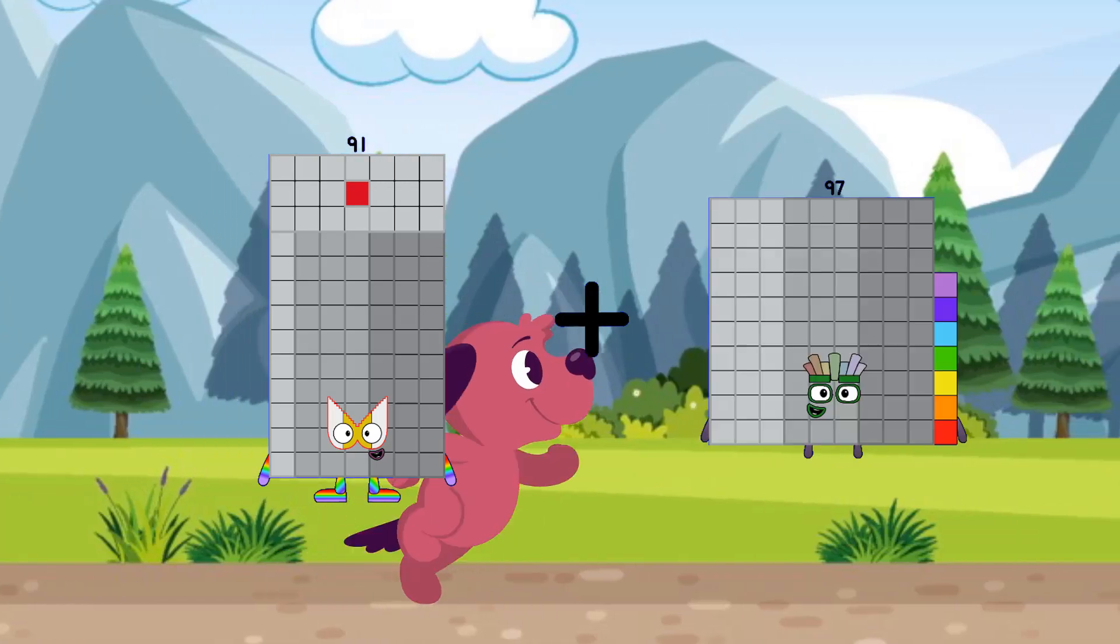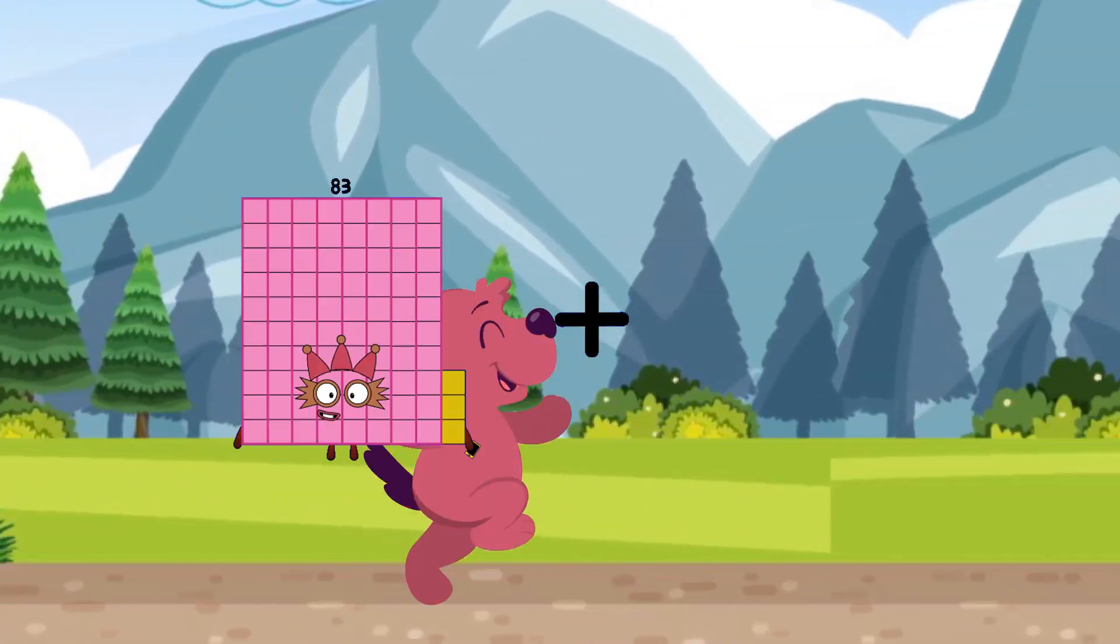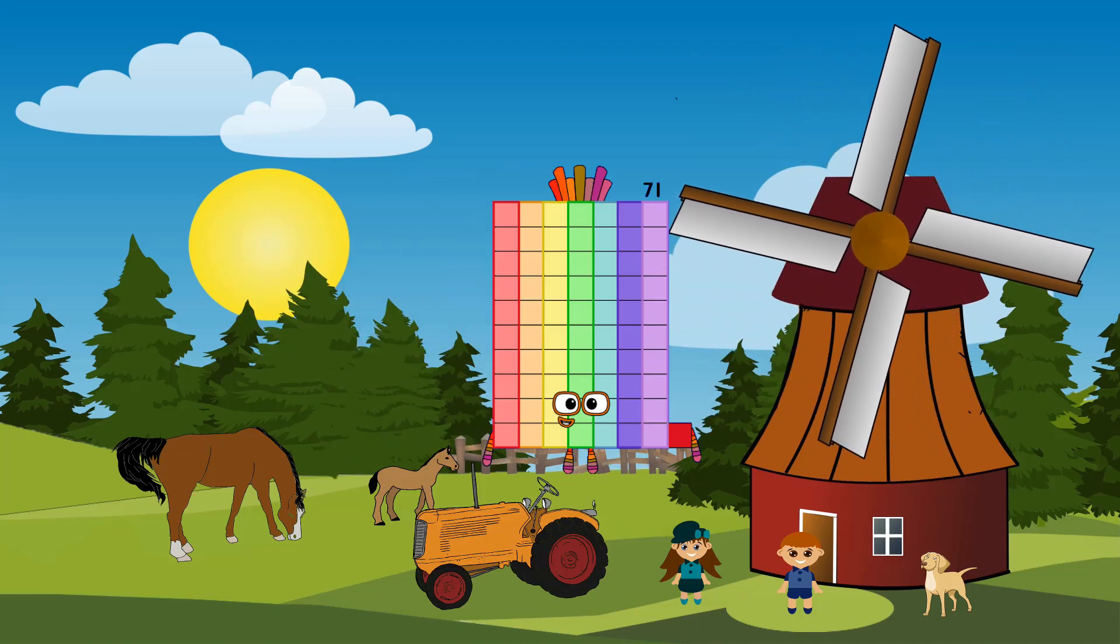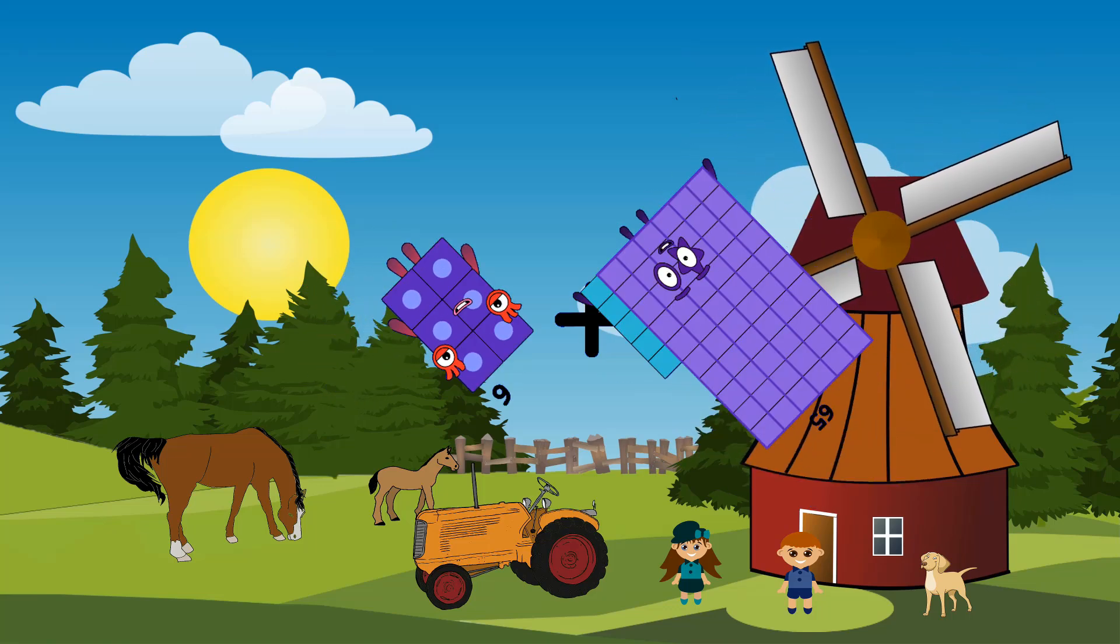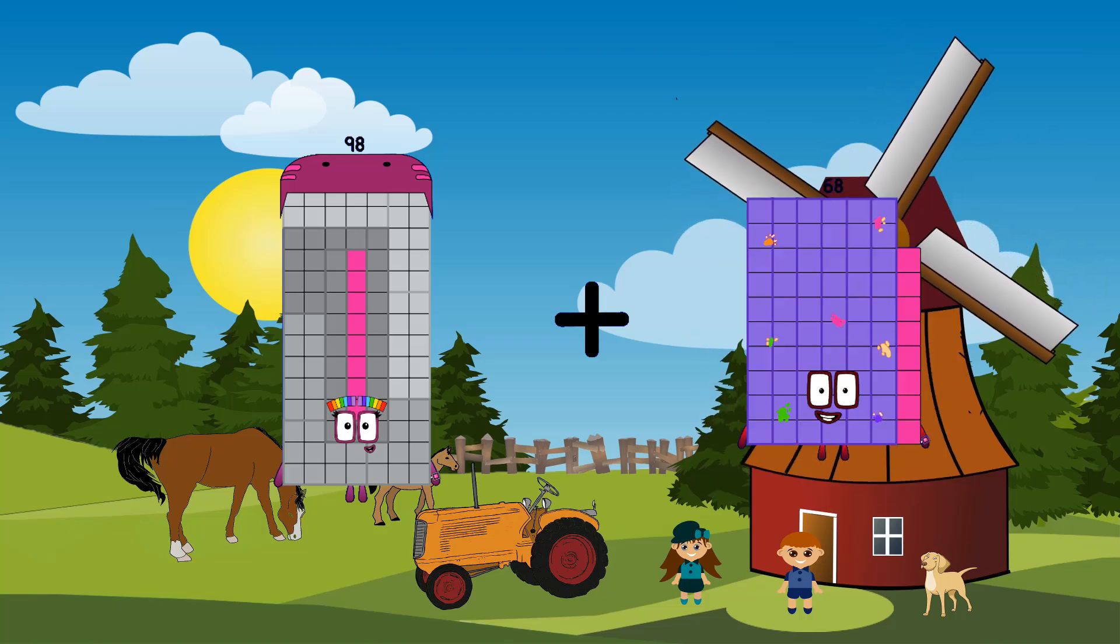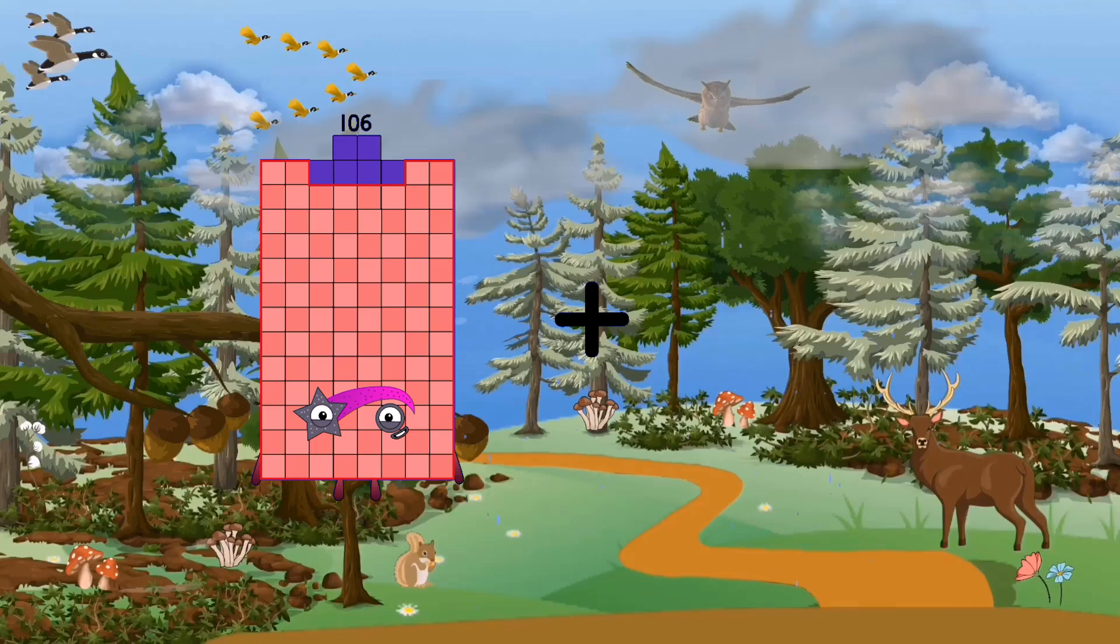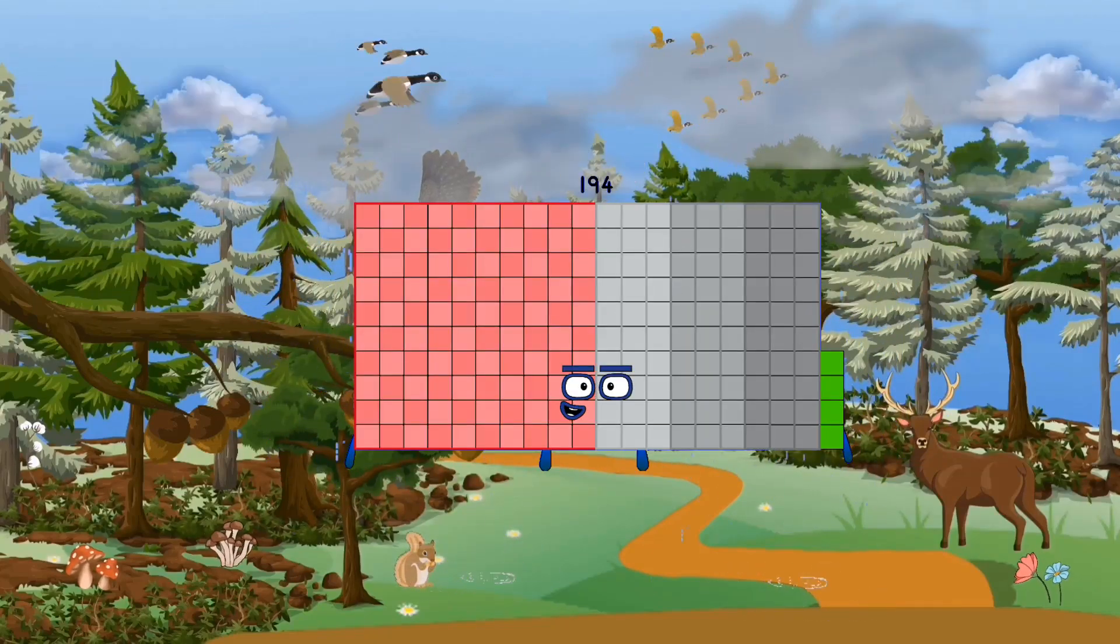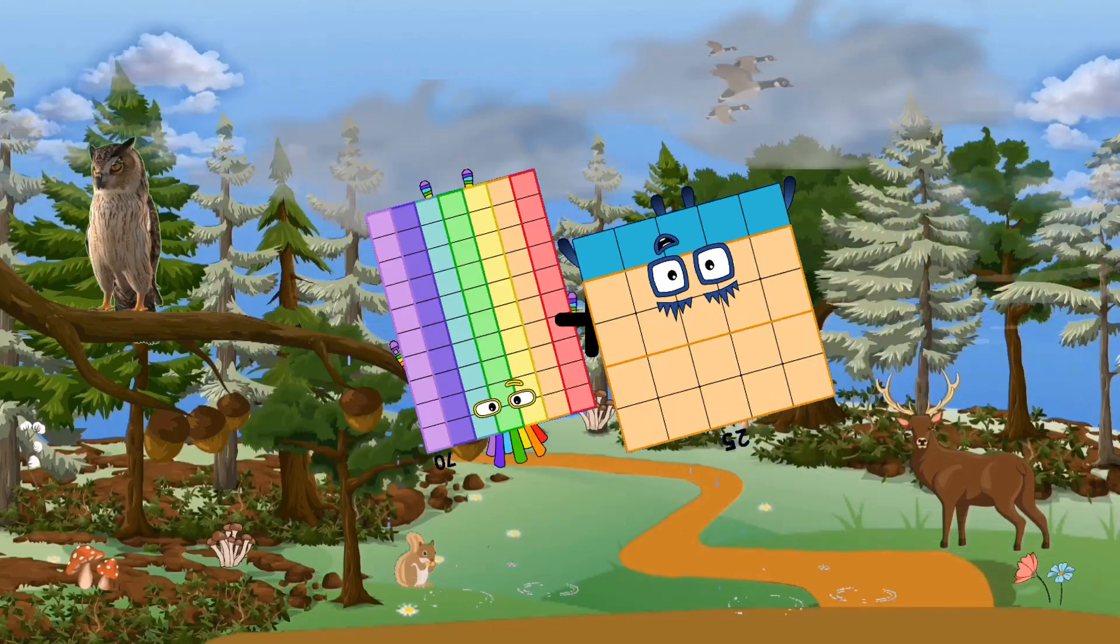91 plus 95 equals 186. 58 plus 13 equals 71. 6 plus 65 equals 71. 98 plus 80 equals 178. 106 plus 88 equals 194. 70 plus 25 equals 95.